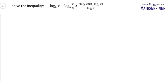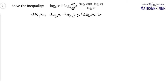For this question, I need to solve the inequality. I'll write it as log x to the base 5, and now this is log m by n, which is log m minus log n. So I can write log x to the base x minus log 3 to the base x, and this is log x base 5 minus 2 log x base 3, and this is log x base 3.